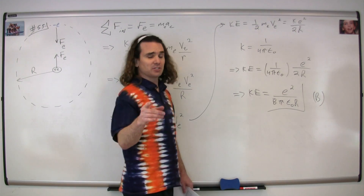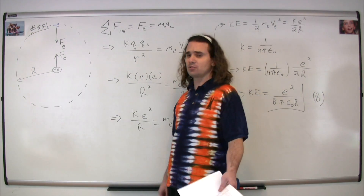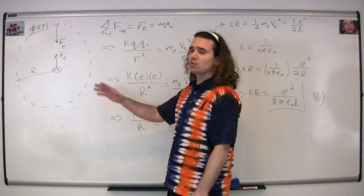Student: An electron has a negative charge, so shouldn't you plug in negative e for the electron and get a negative in your answer, which would be choice C? Teacher: It's a good question, Bobby, and a pretty common mistake for students to make. So it comes back to our free body diagram.